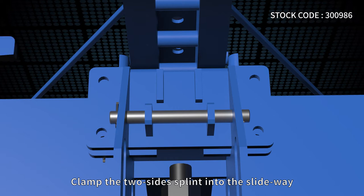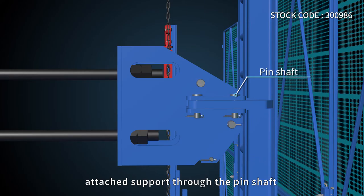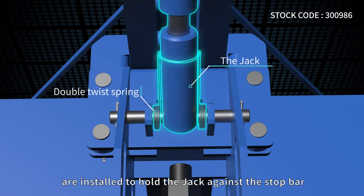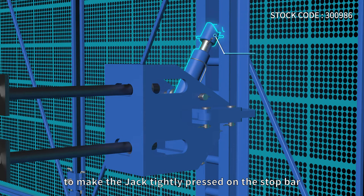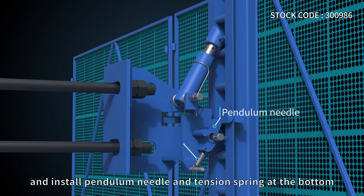Clamp the two side splints into the slideway, and install the splints on the wall-attached support through the pin shaft. Install the jack and double twist spring to hold the jack against the stop bar. Then adjust the adjusting screw on the jack to make it tightly pressed on the stop bar, and install the pendulum needle and tension spring at the bottom.